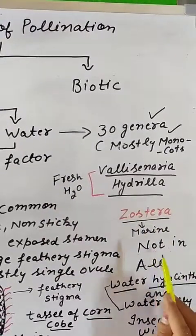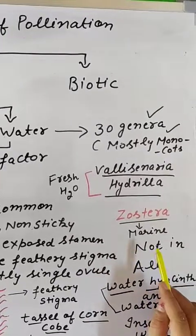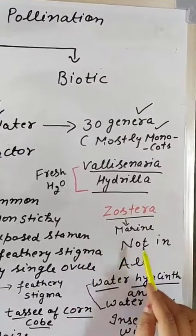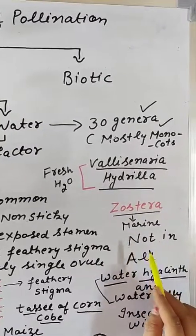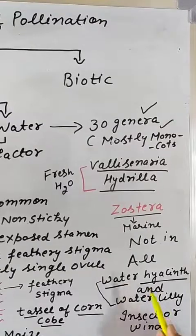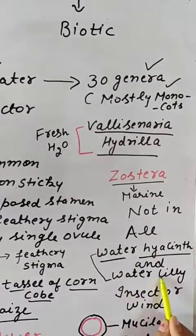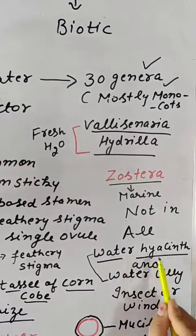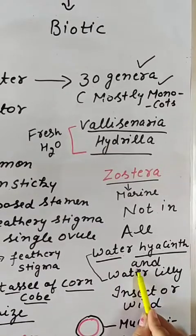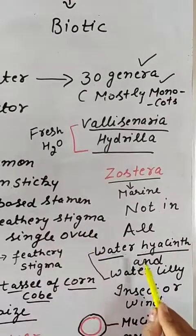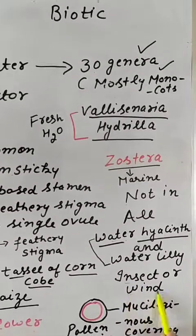Not all water plants have water pollination. For example, water hyacinth and water lily are water plants, but pollination in them does not take place by water — it may take place either by insects or wind.